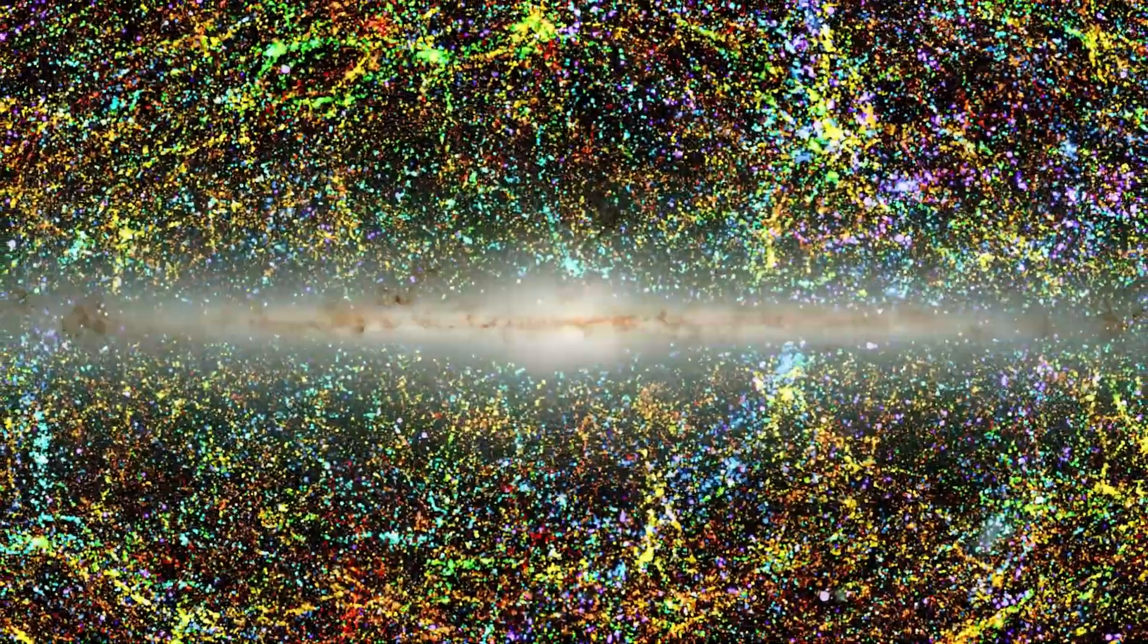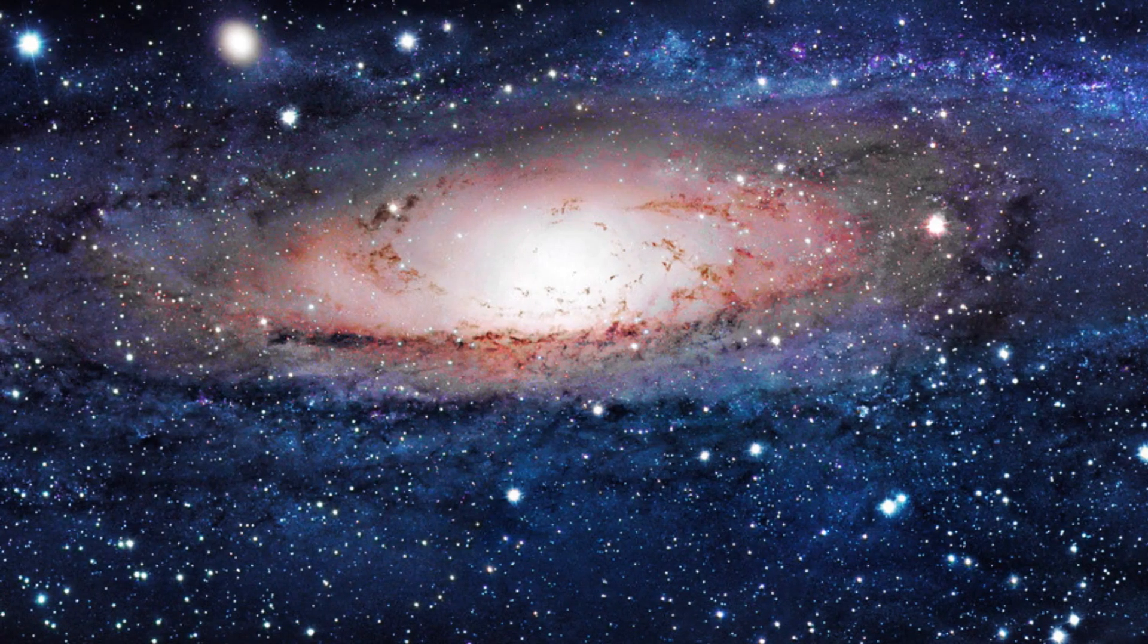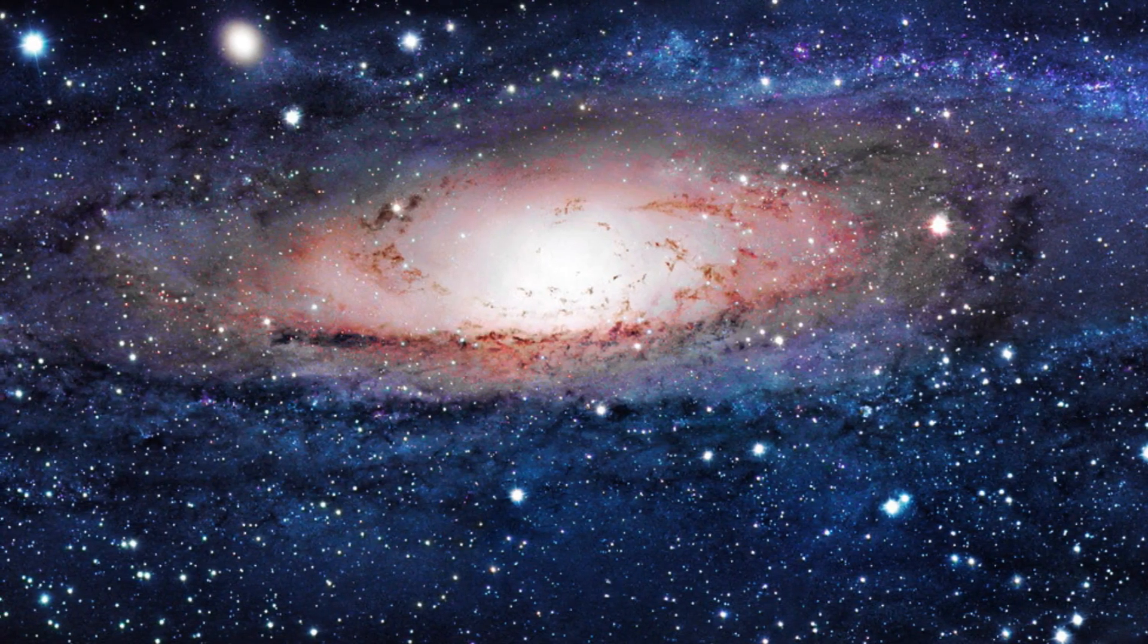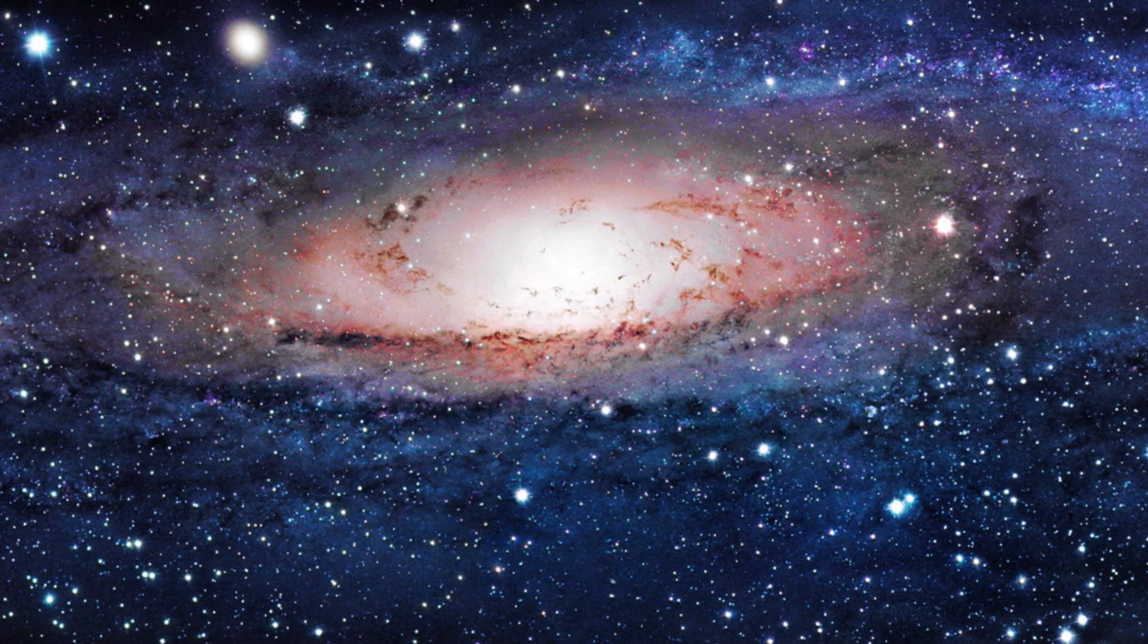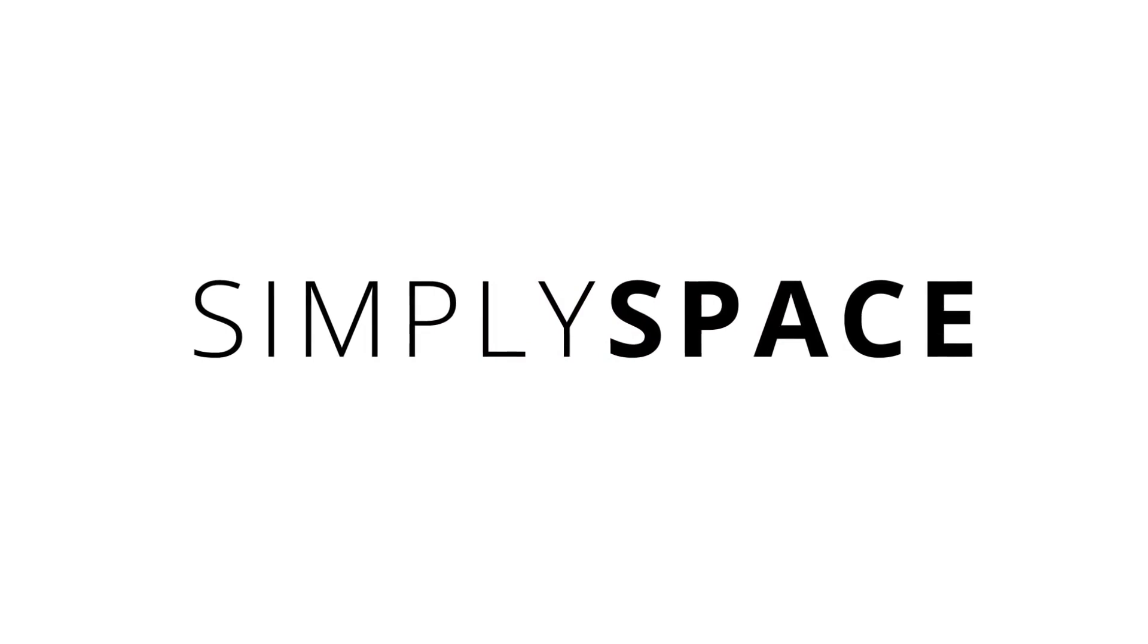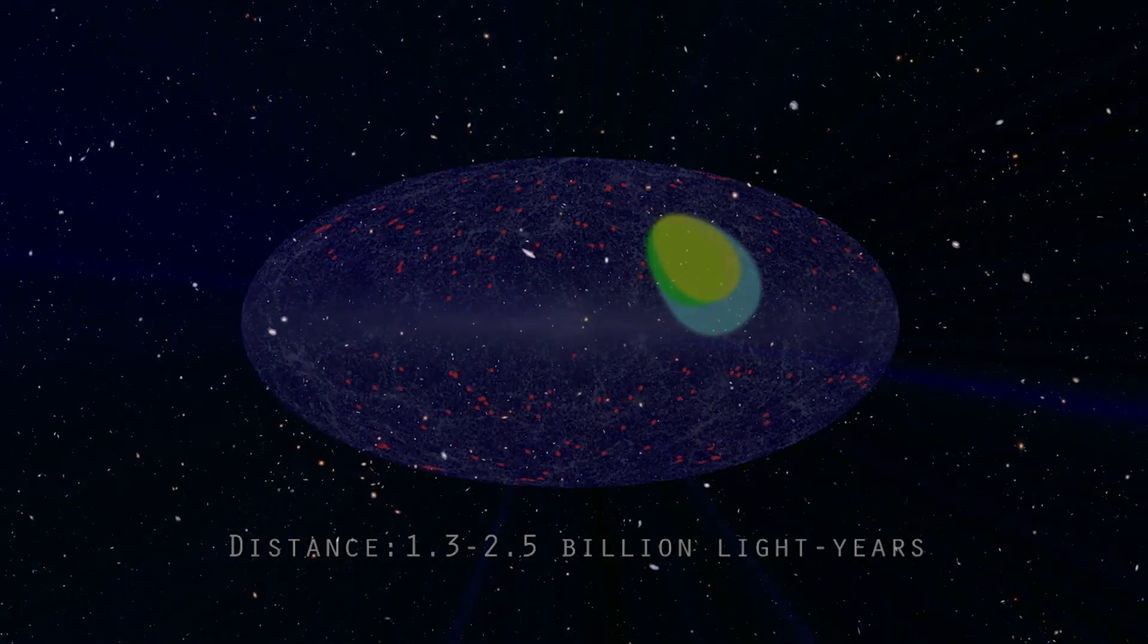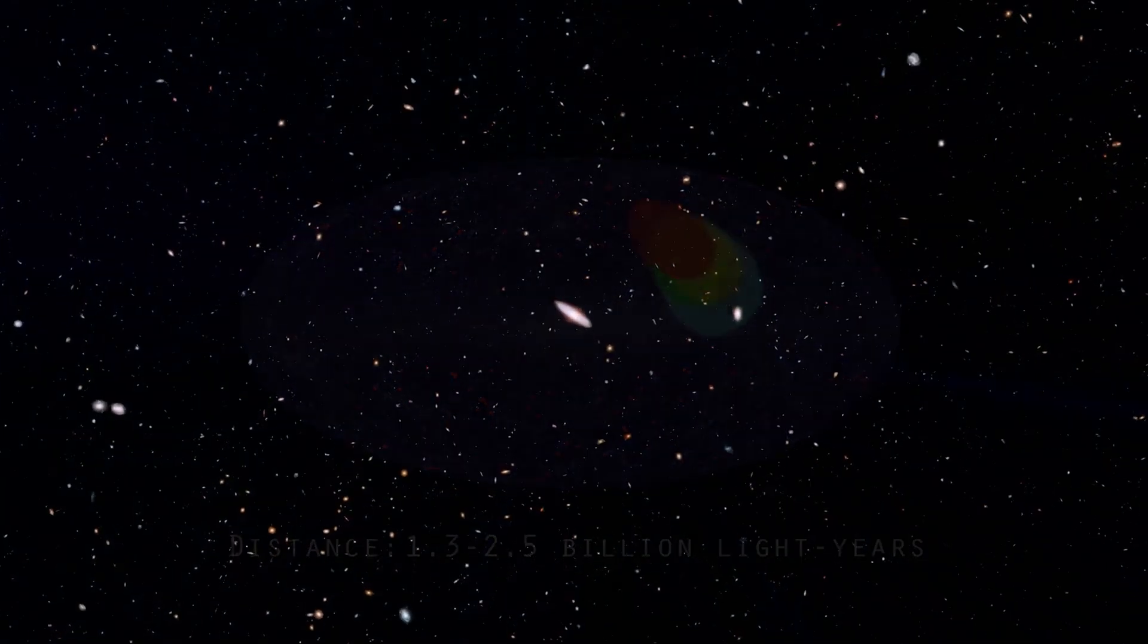Cosmologists estimate that the oldest photons we can observe have traveled a distance of 45 to 47 billion light years since the Big Bang. This means that the observable universe is about 93 billion light years large, plus or minus a few light years. These approximately 93 billion light years contain all the quarks, quasars, stars, planets, nebulae, black holes ever recorded by a telescope, and everything else that we might be able to observe but have not yet seen. But the observable universe contains only the light that has had time to reach us.